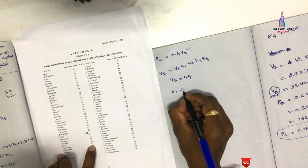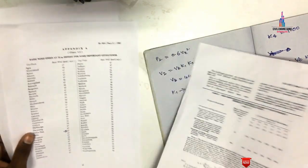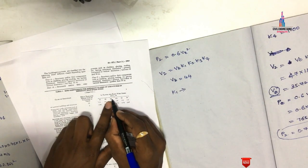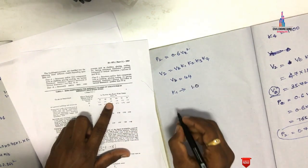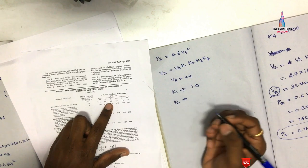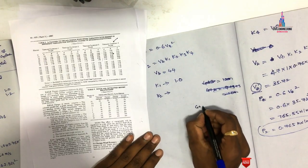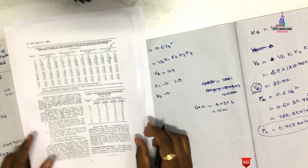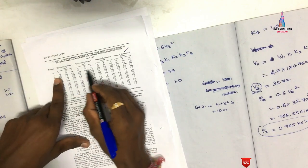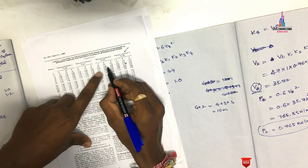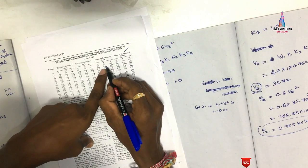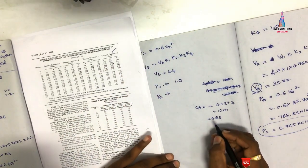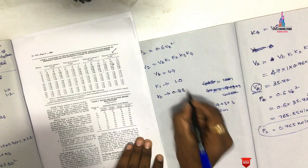From Table 1 of IS 875 code, for 44 m/s, K1 = 1. For K2, I am considering a G+2 storey building, which is 4 + 3 + 3 = 10 meter height. From Table 2, for terrain category 3 at 10 meters with class B, K2 = 0.88.